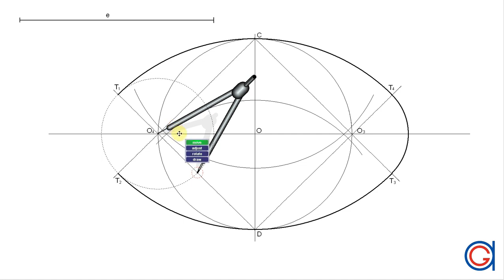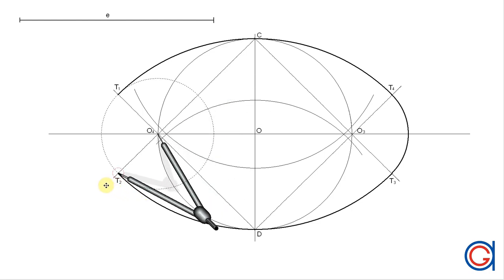With the same radius, setting the compass on point O4, we join tangent point T2 to tangent point T1, again with a thicker line.